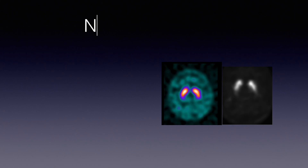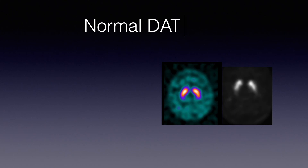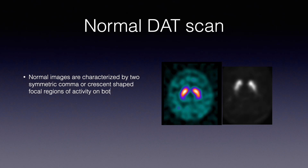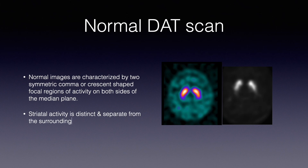The following two illustrations on the right demonstrate a normal DAT scan. The normal images are characterized by two symmetric comma or crescent-shaped focal regions of activity on both sides of the median plane. Striatal activity is distinct and separate from the surrounding brain tissue.